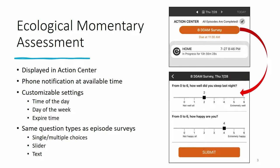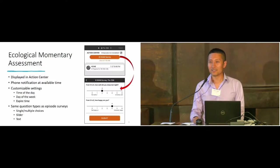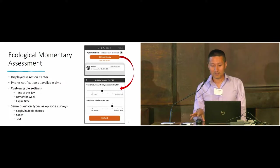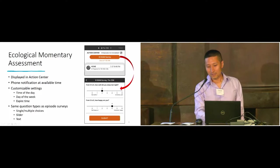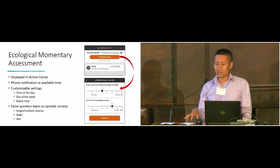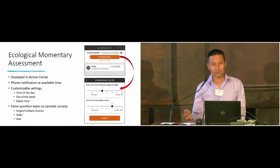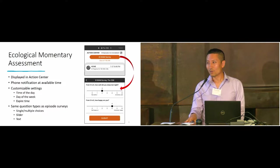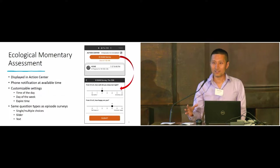Each project can customize several things, including the time of day—you can have an 8:30 survey, noon survey, or 3 p.m. survey, any time. You can also customize the day of the week: Monday, Tuesday, any day, workday, or weekend. We also have an expiration time. In this example, the survey is available at 8:30 in the morning and gives the user three hours to complete it. You can change this window—you can give them 30 minutes, a day, or even no expiration time.